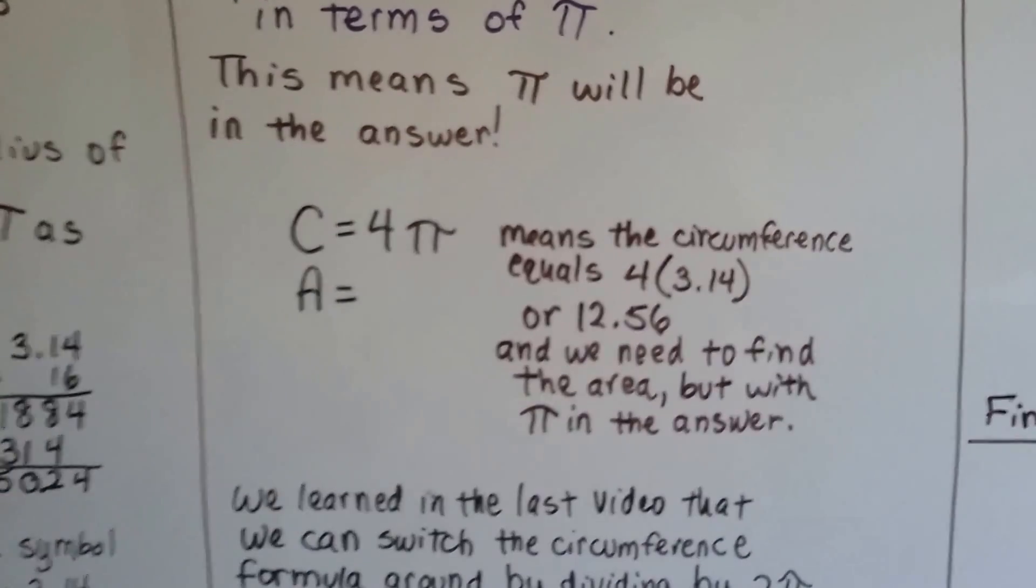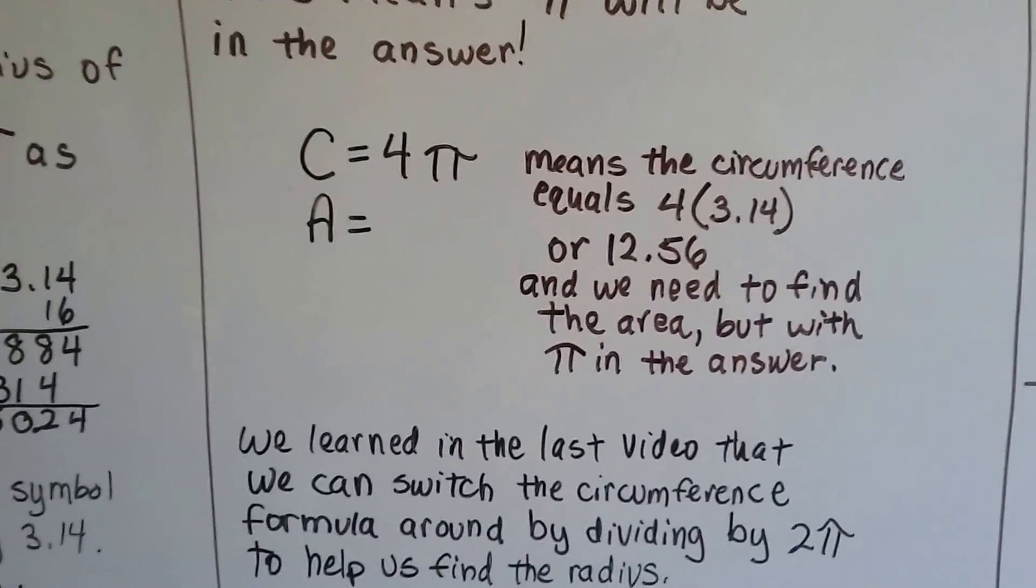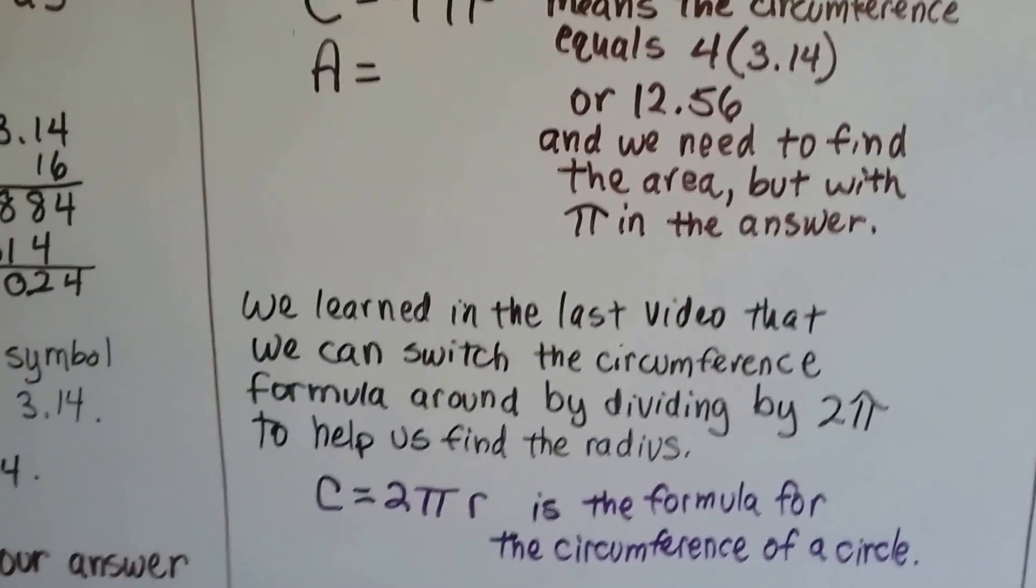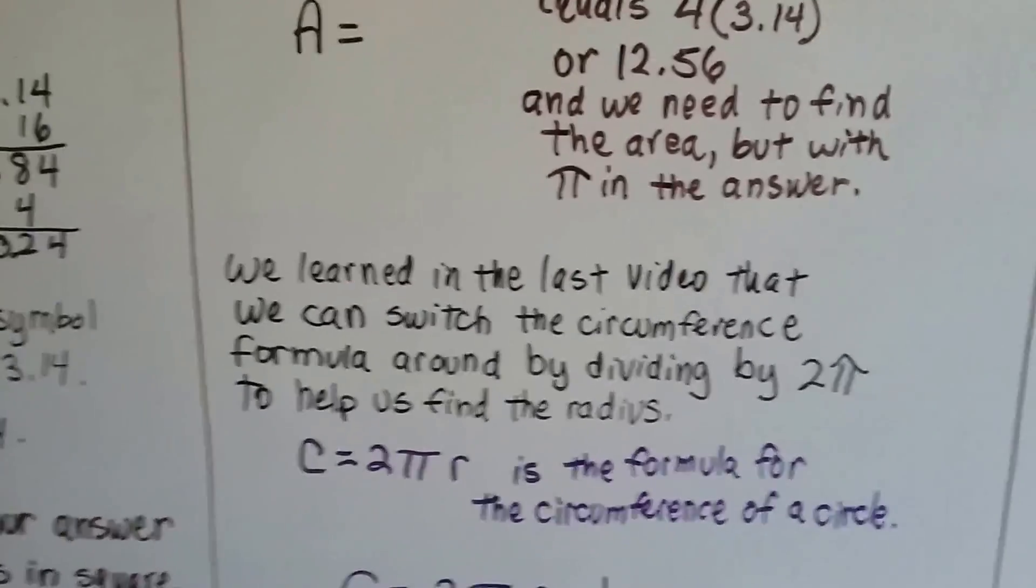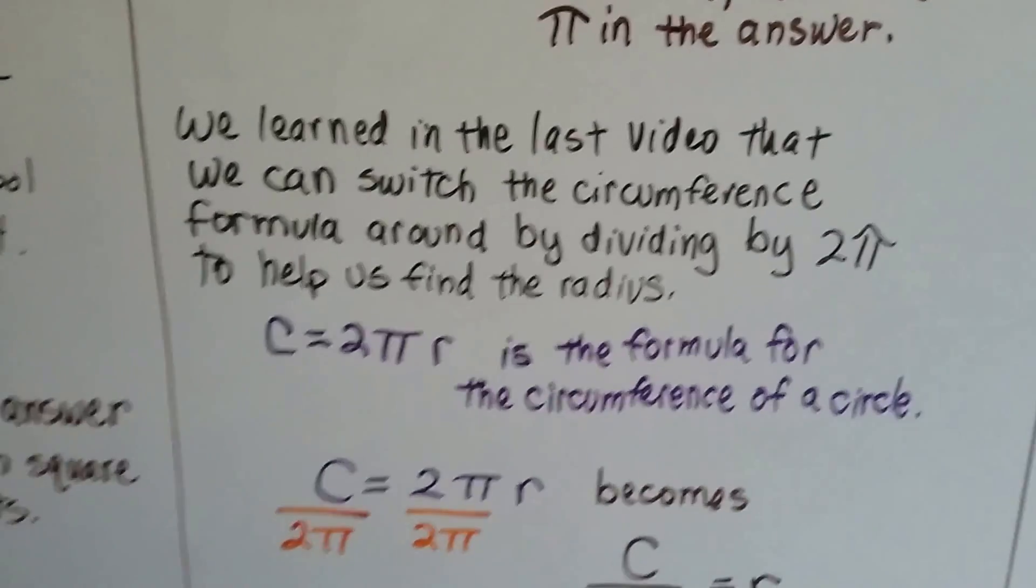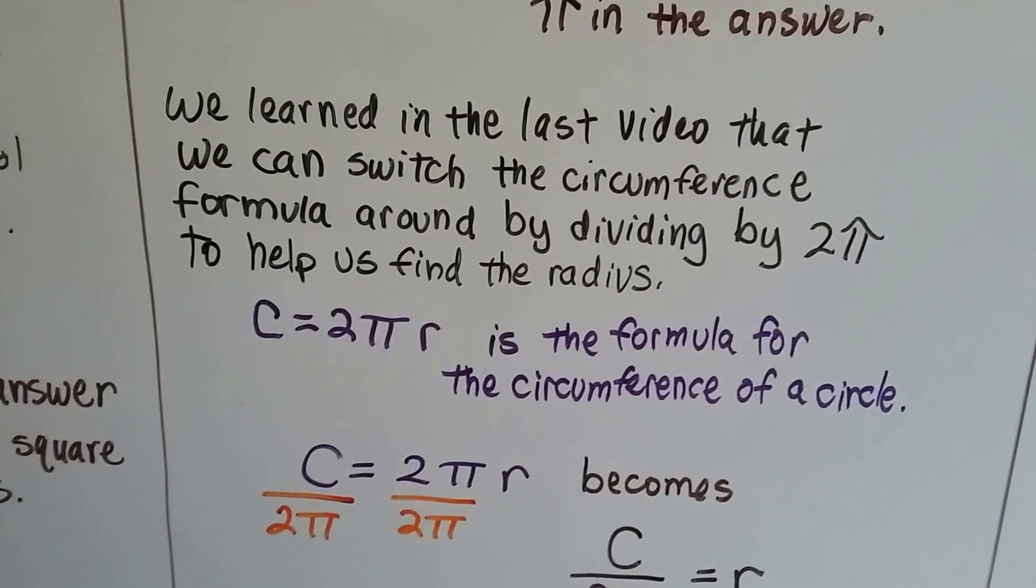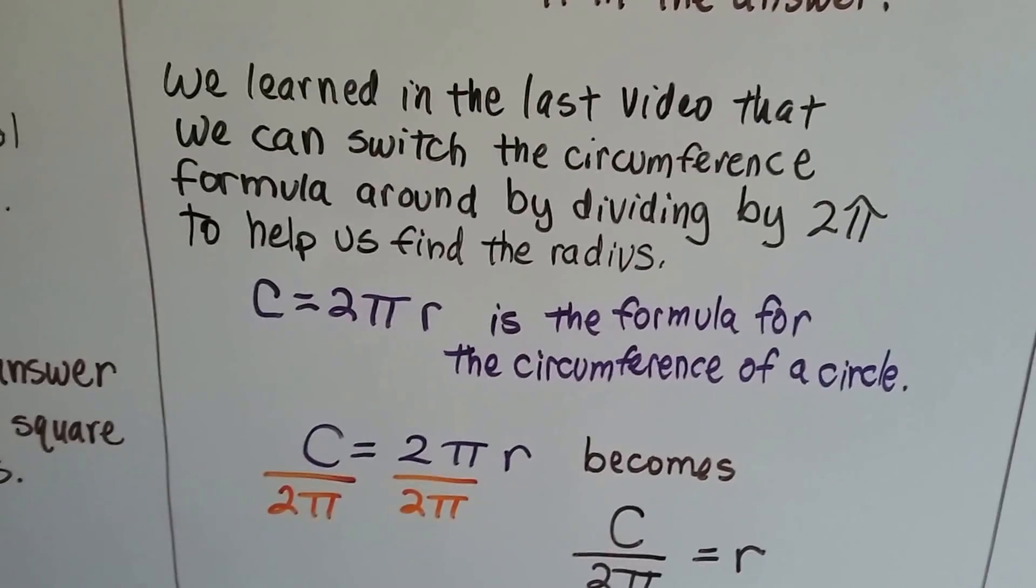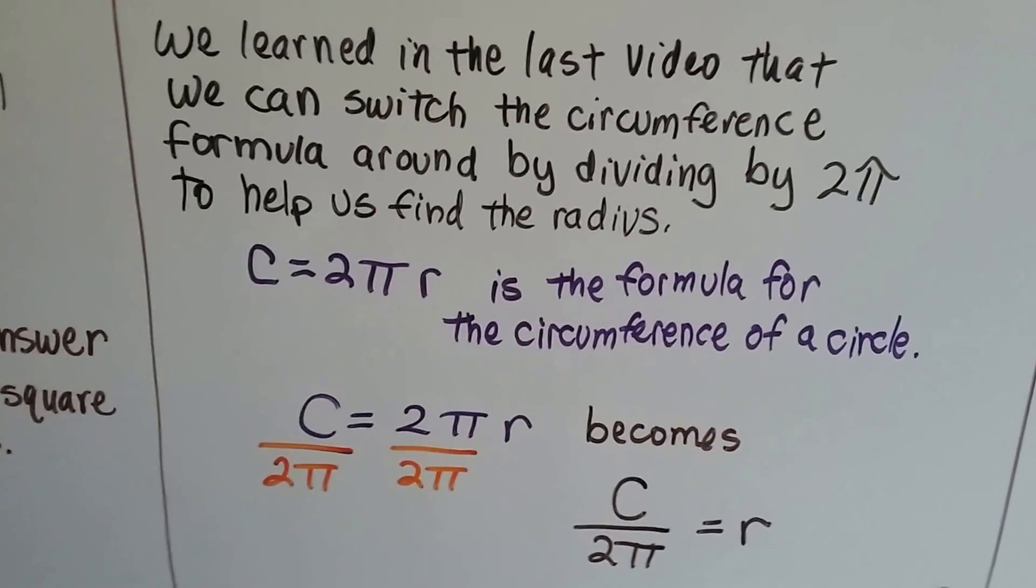So now we know the circumference, and we need to find the area, but with pi in the answer. So now we know the circumference, but we don't know the radius, we don't know the diameter. Well, we learned in the last video that we can switch the circumference formula around by dividing by 2 pi to help us find the radius.